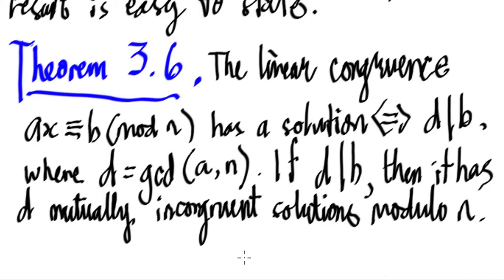It states that the linear congruence ax is congruent to b mod n has a solution if and only if d divides b, where d equals the greatest common divisor of a and n.